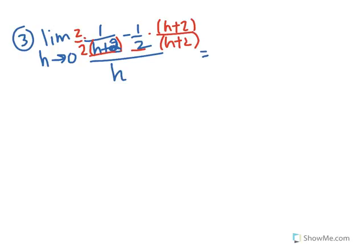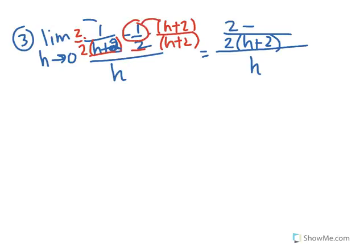So now you have a common denominator to simplify. This is still all going to be over h. Here I'm going to have the 2 and the h plus 2 that are common. On the top, when I distribute this out, I get the 2, and then minus — distributing the negative 1 to the whole thing — I get minus h, so minus h minus 2.